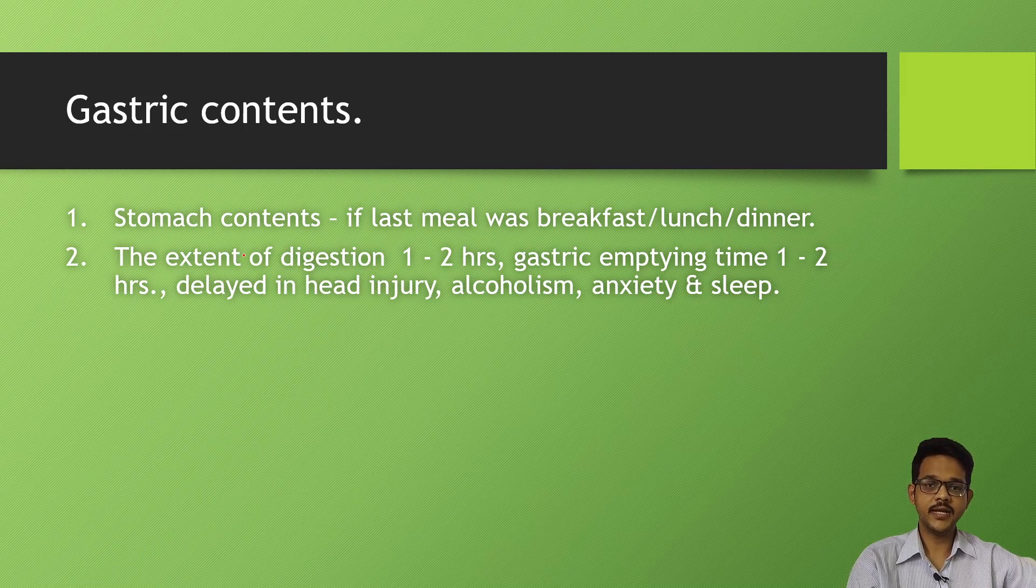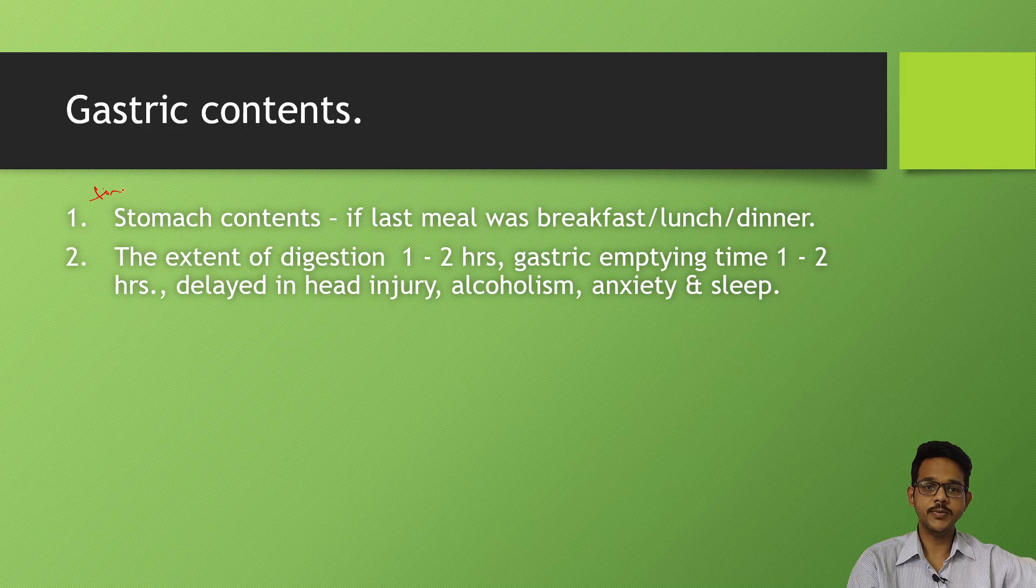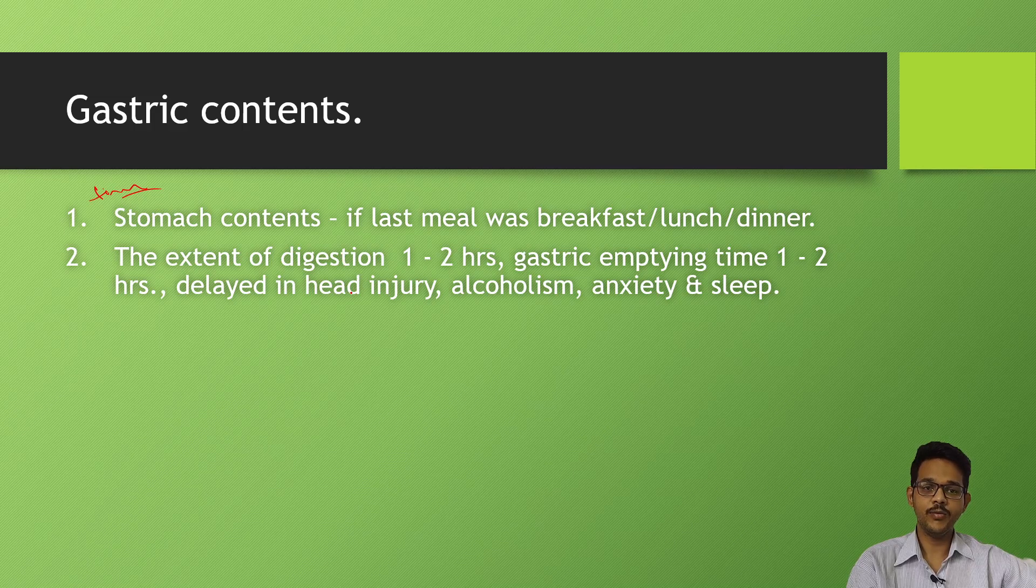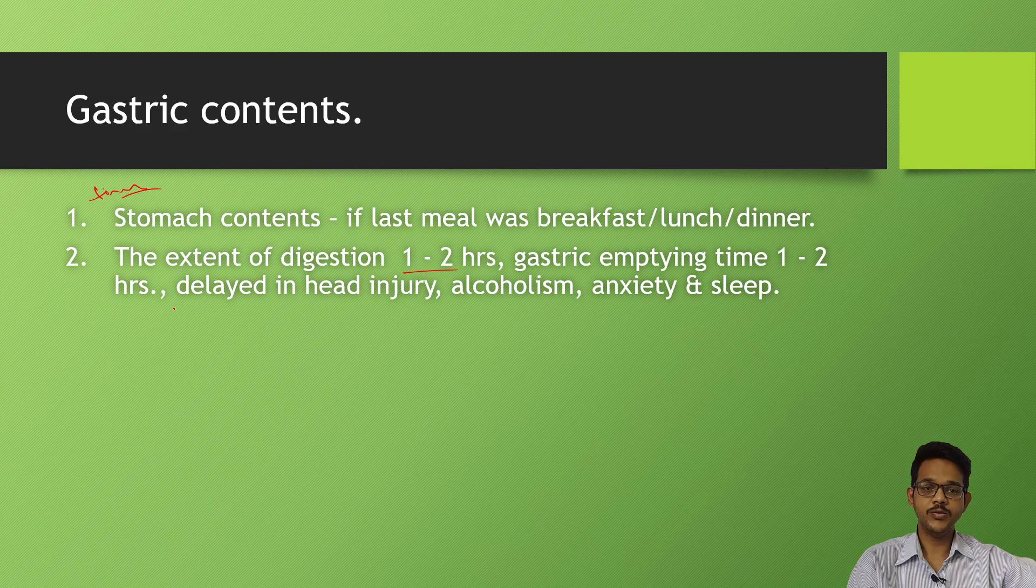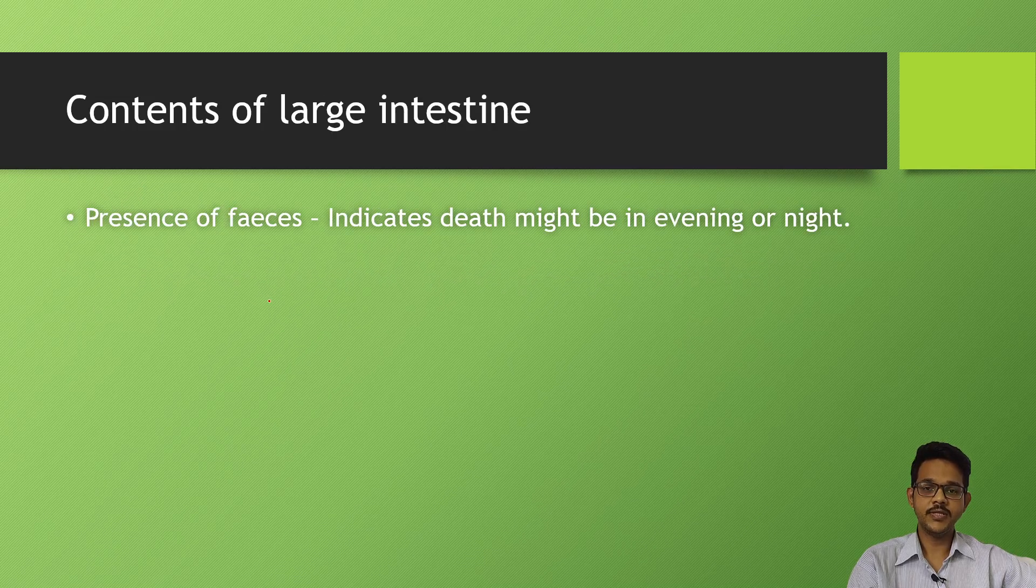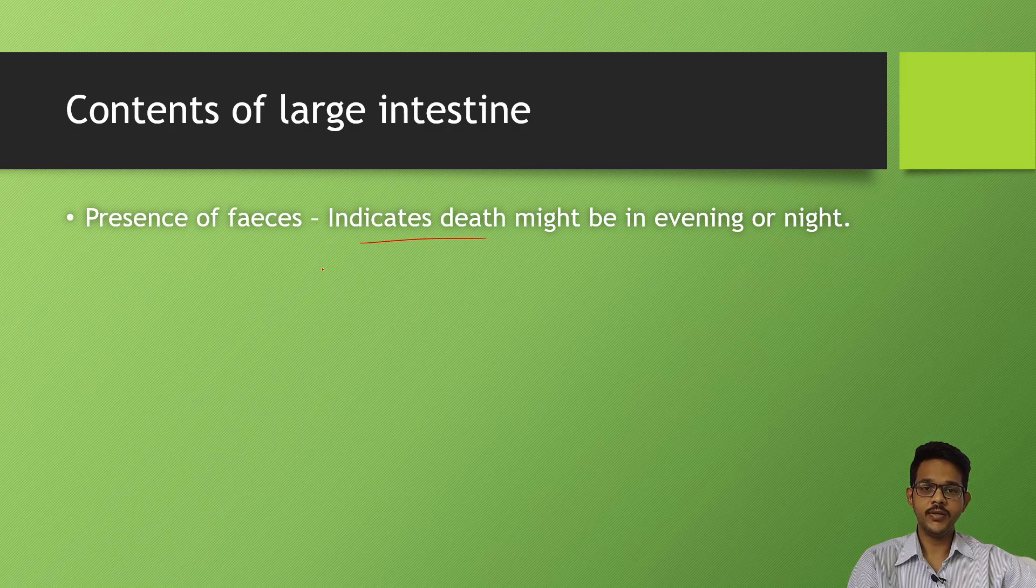Based on gastric contents, it is only helpful if time of consumption is known. If the person's time of last meal is known, like if he went to the hostel and you know when he has eaten, then we can know. Extent of digestion takes one to two hours and gastric emptying takes two hours. Sometimes it may delay in head injury, alcoholism, anxiety, or sleep. Contents in the large intestine, if present, indicates the person may have died in the evening or night.